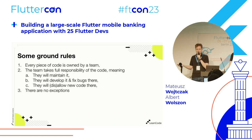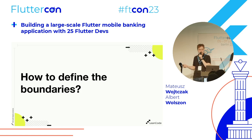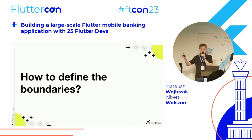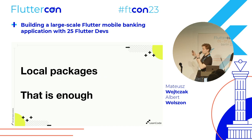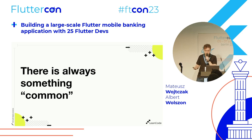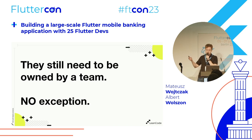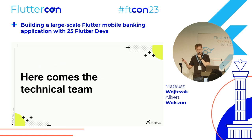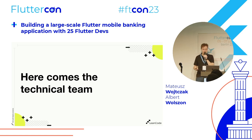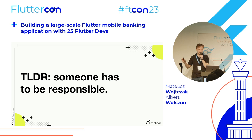The third rule is that there are no exceptions, because otherwise it won't work. Now, how to define the boundaries? For us, local packages was enough — each Dart package has exactly one explicit code owner documented. But there's always something in common, like formatter and utility packages, and they still need to be owned by a team because we have no exceptions. This is where the technical squad comes in — it's the team that does and maintains the things no one else wants to. A summary: someone has to be responsible for every piece of code.